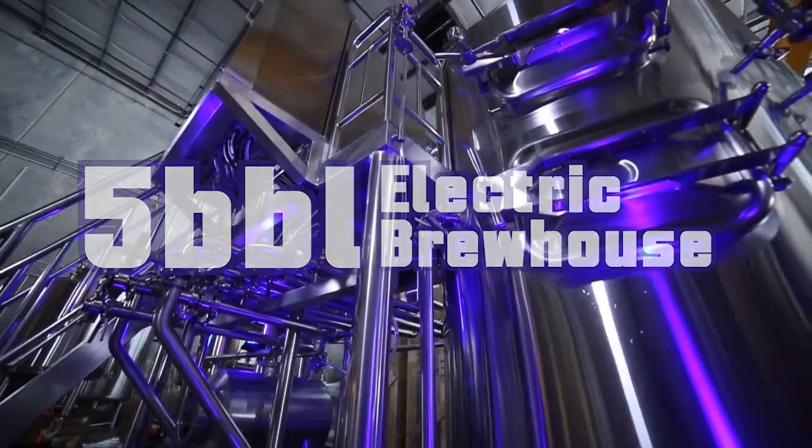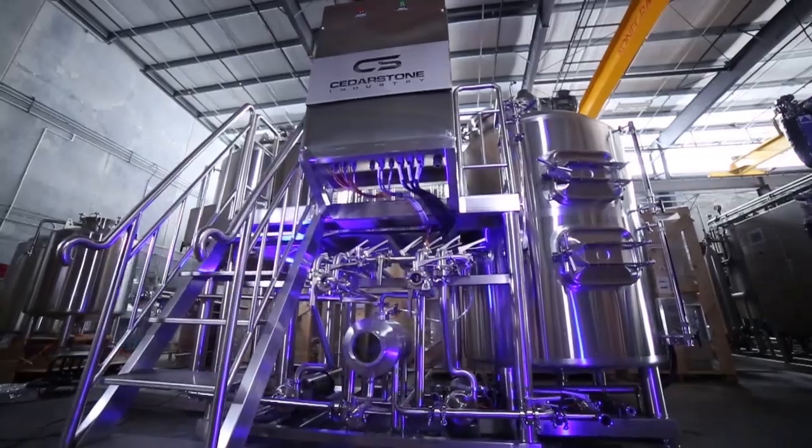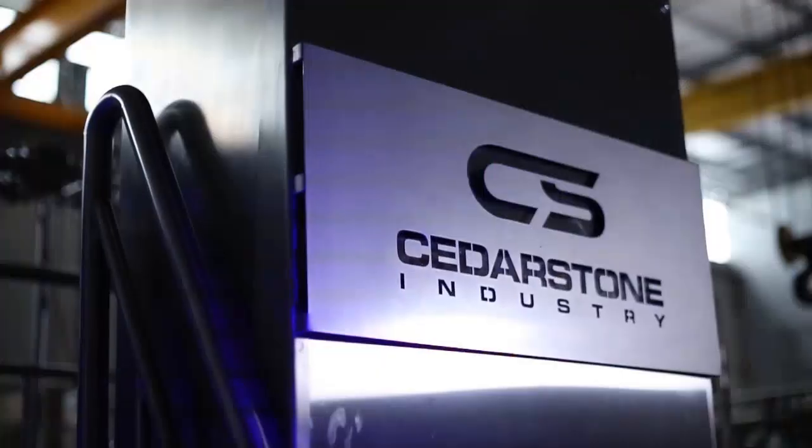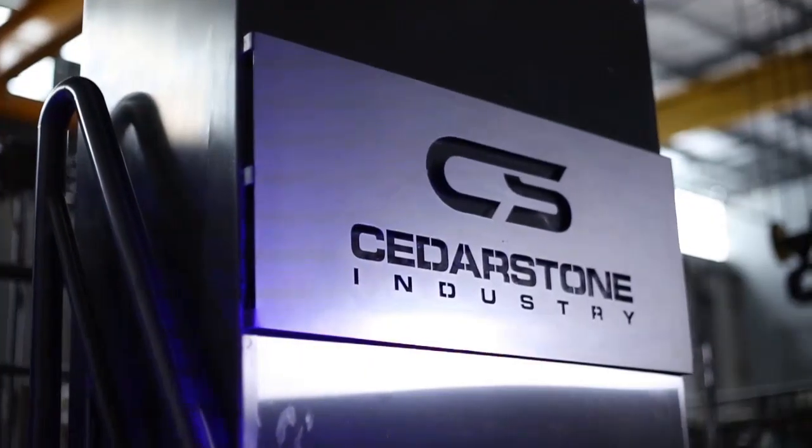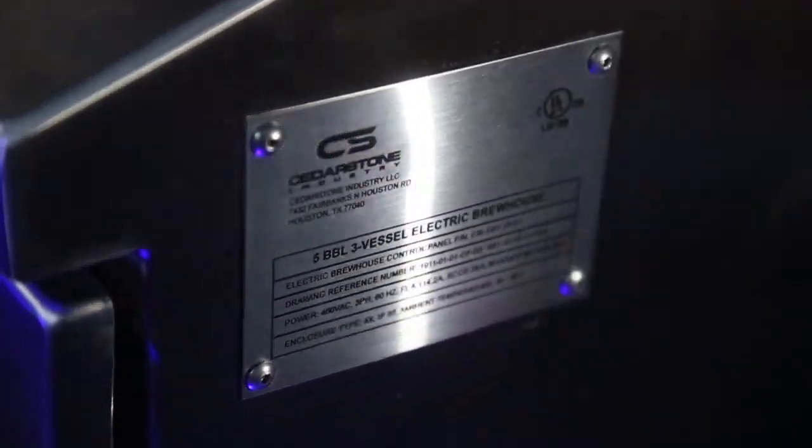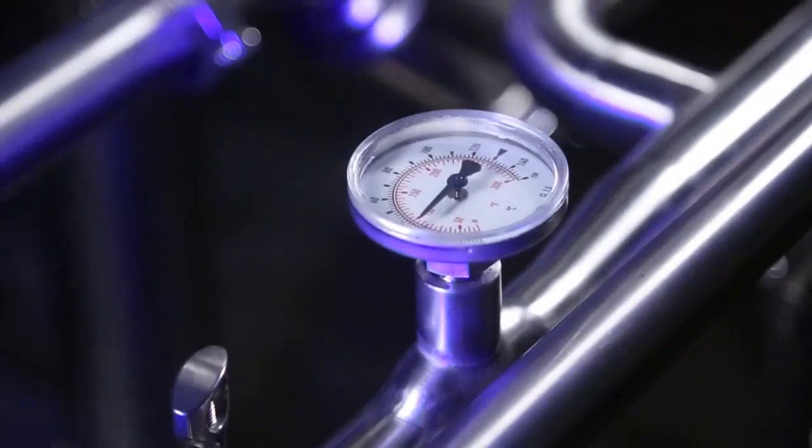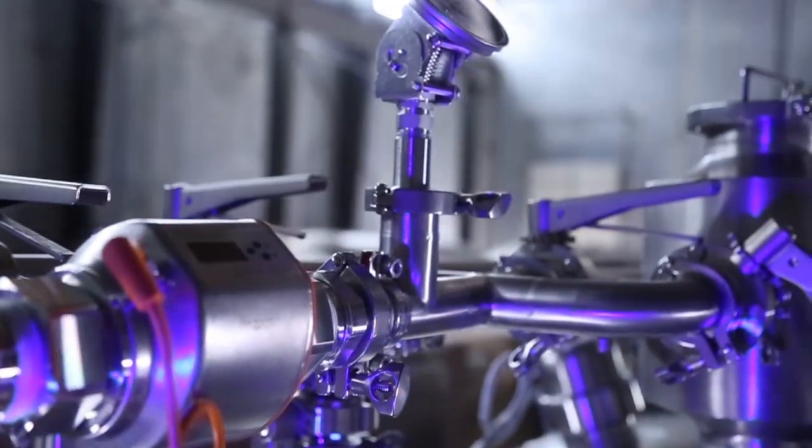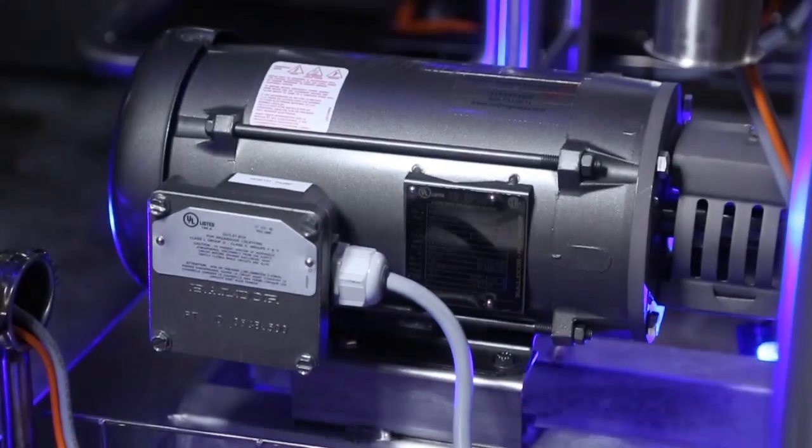This is the latest five-barrel electric two-vessel brewhouse integrated with hot liquor tank from Cedarstone Industry. This skid-mounted brewhouse is comprised of mash tun, lauter tun in one vessel, brew kettle and whirlpool in another vessel. The hot liquor tank is stacked below the mash lauter tun.